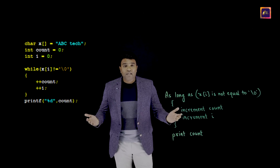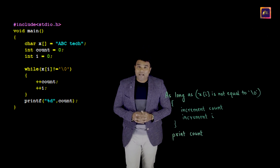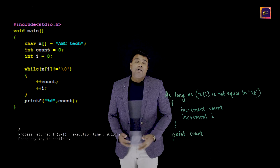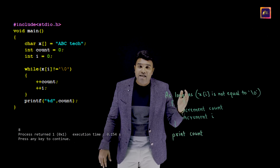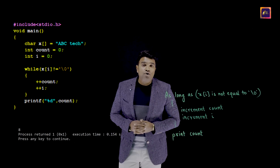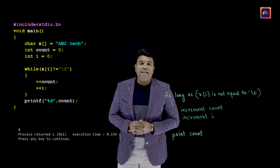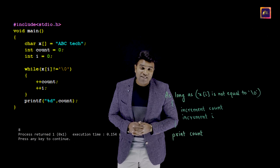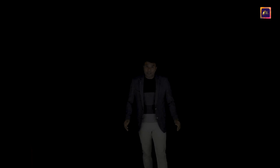The full program looks like this, and when executed I get the correct output. I'm sure you've been able to understand how to count the total number of characters in a string in C. But is there a simpler method? Yes, let me explain.